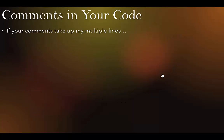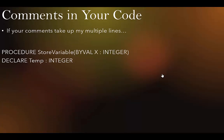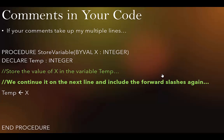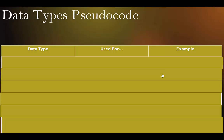Now, if your comments take up multiple lines, you simply continue on the next line and include the forward slashes again. You do not use a forward slash followed by a star — you use two forward slashes for each line. If it goes on to a new line, you have to put those two forward slashes again. Then I'm storing x in temp, and I simply end my procedure. That is how you do comments in your code.